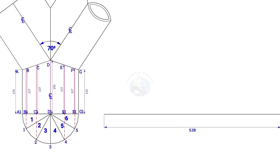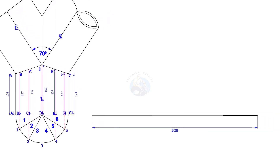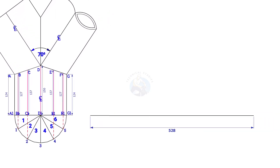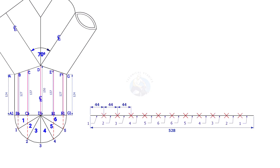Since we divided the half circle into 6 parts, divide the line into 12 equal parts. 528 divided by 12 is 44, so the length of each segment is 44 millimeters.